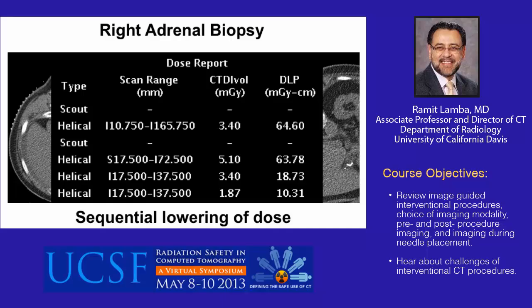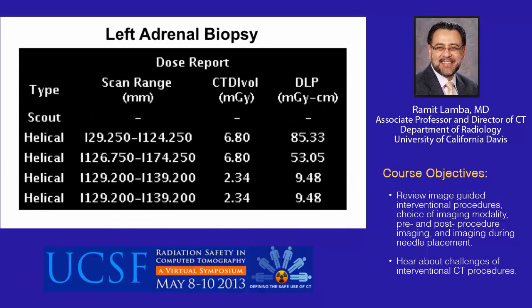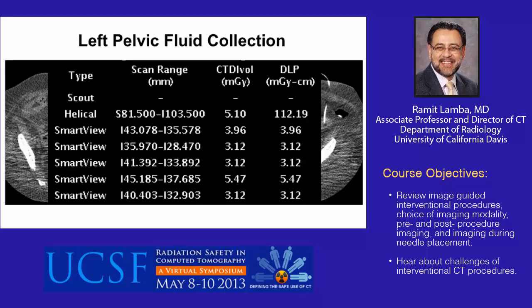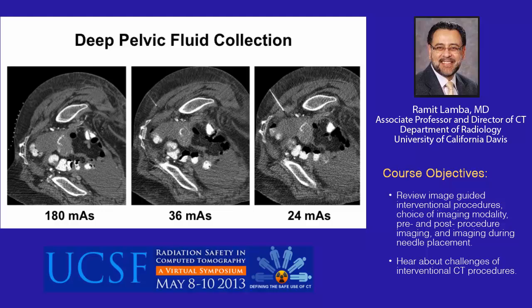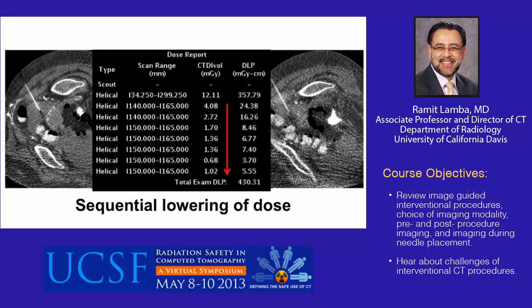Another example of an adrenal biopsy: the diagnostic scan was obtained at 100 mAs and the needle check scan at 40 mAs, which we perceived to be adequate to visualize the needle approaching the target. In another case where a pelvic fluid collection is being drained using CT fluoroscopy guidance, ultra-low-dose scans were obtained both for guiding needle placement and subsequently to check catheter position. In yet another example, a deep pelvic fluid collection was aspirated with the diagnostic scan at 180 mAs, with sequential lowering for needle check scans down to 36, 24, 10, 15, and finally 9 mAs.